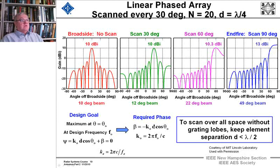So this gives you the equations showing what the required phases are to scan over all space without grating lobes. What we want to do is to keep the element separation, D, less than lambda over 2.